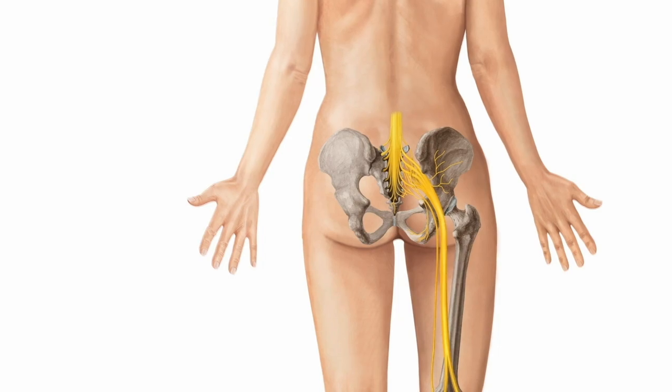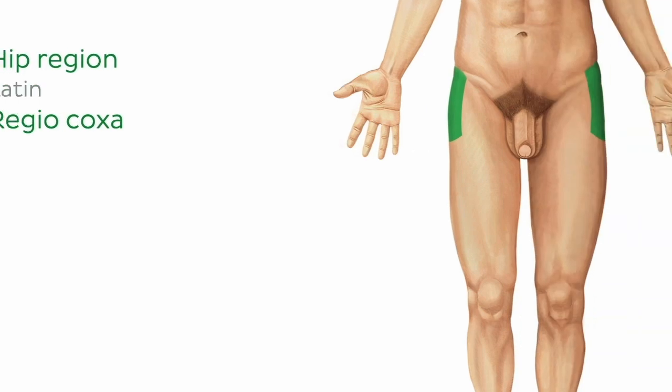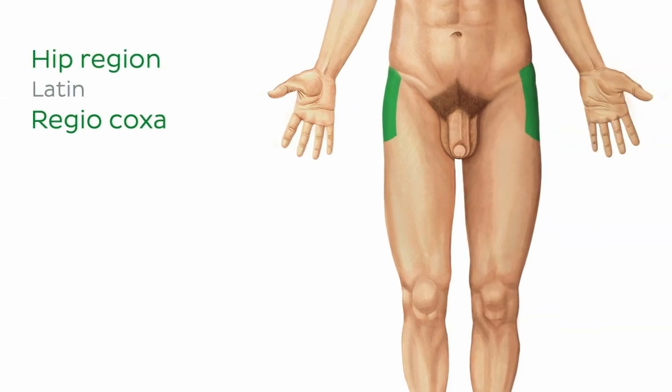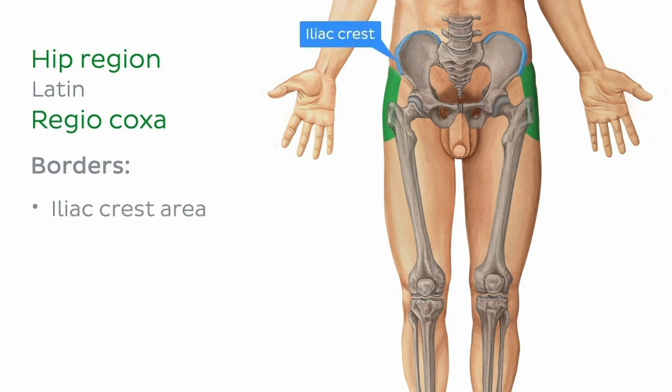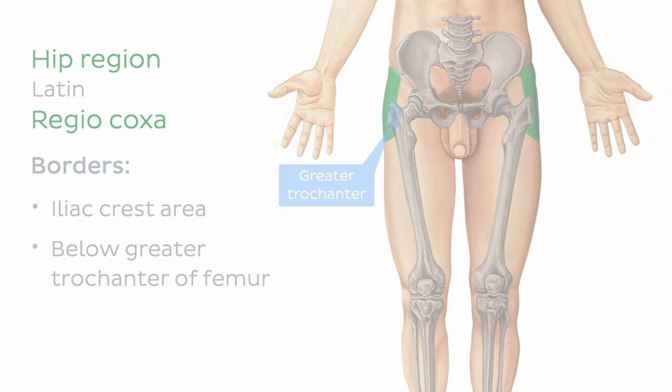Let's stop next for a moment at the hip region. This region is located anterior and lateral to the gluteal region and extends once again from the top of the hip bone, the iliac crest, to the area just below the palpable bony part of the hip, which is formed by the greater trochanter of the femur.